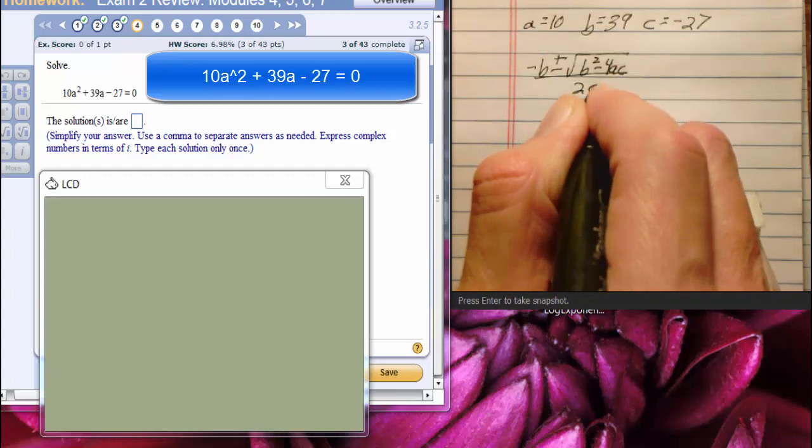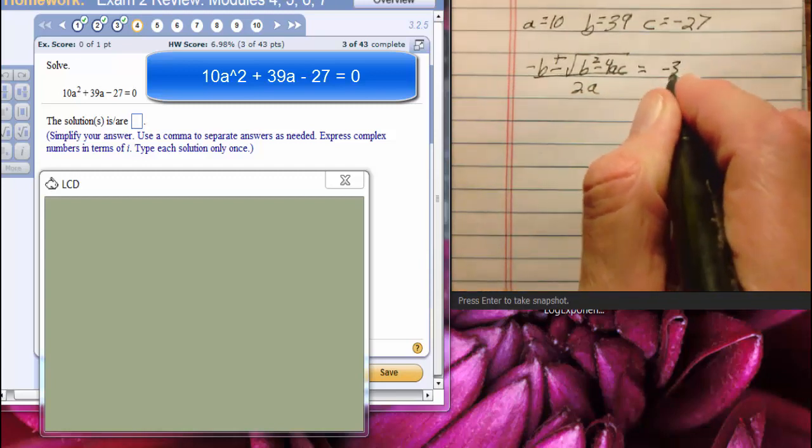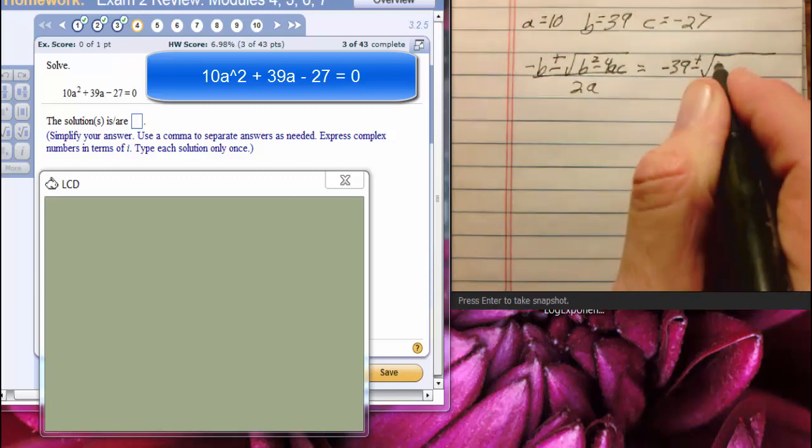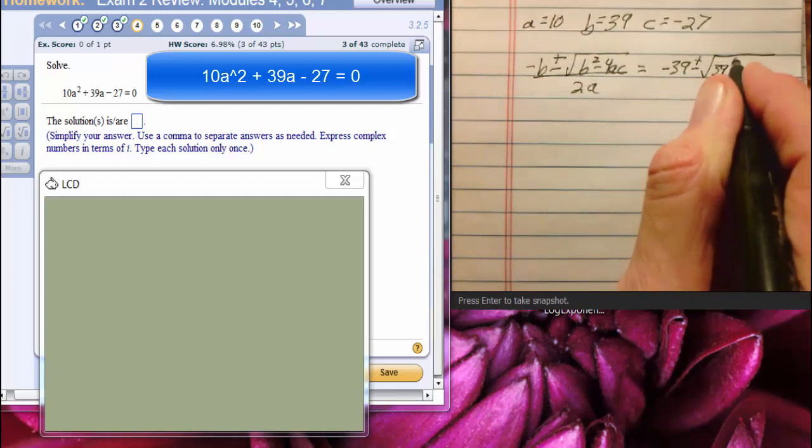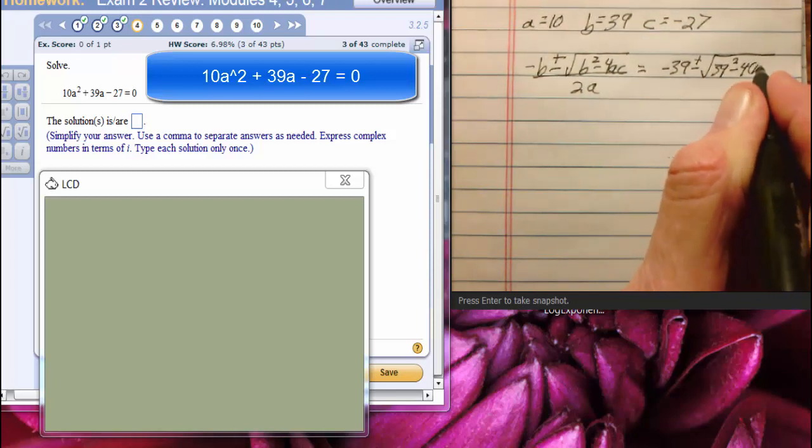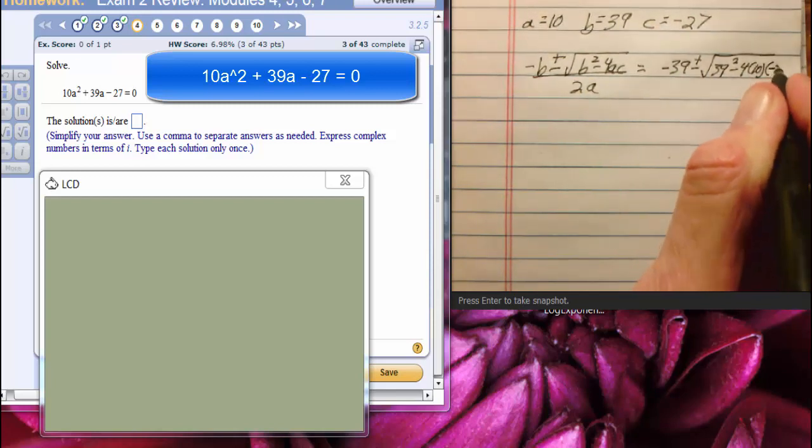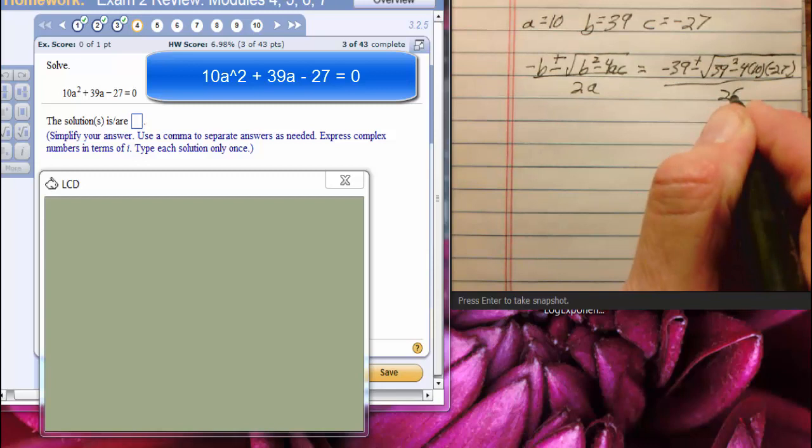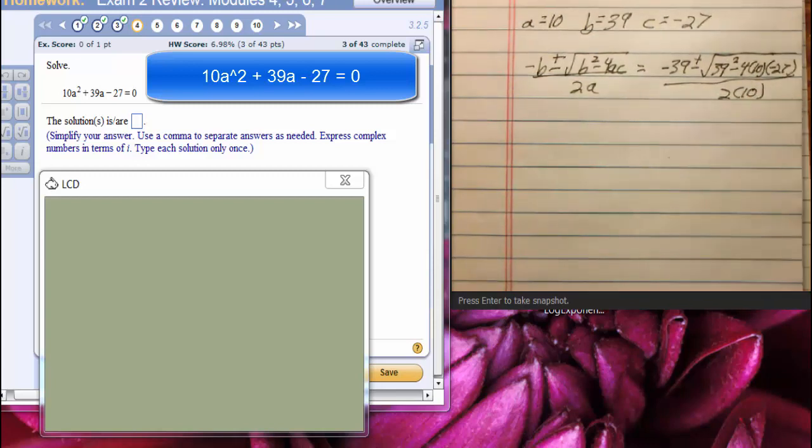So we will have negative 39 plus or minus the square root of 39 squared minus 4 times 10 times negative 27 all over 2 times 10.